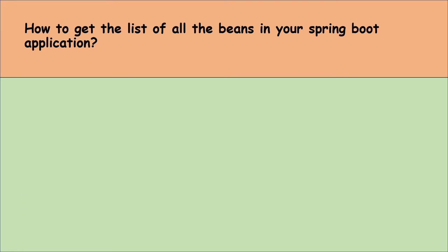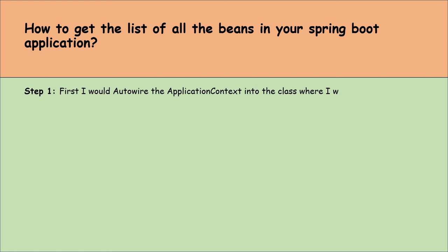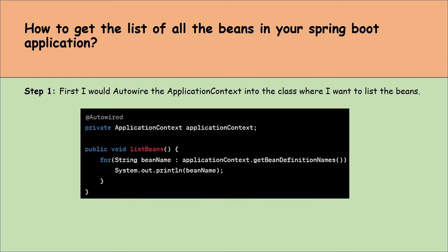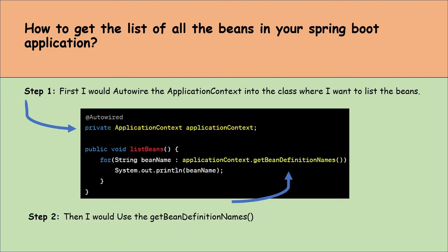How to get the list of all the beans in your Spring Boot application? First, I would auto-wire the ApplicationContext into the class where I want to list the beans, as shown in the code. Then I would use the getBeanDefinitionNames() method from the ApplicationContext to get the list of beans.